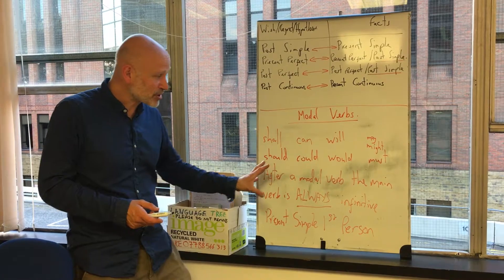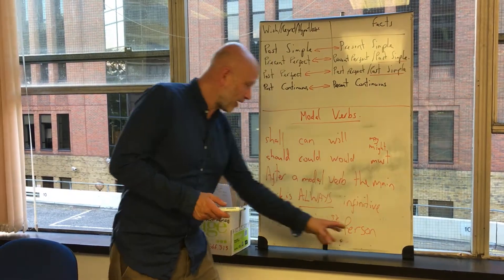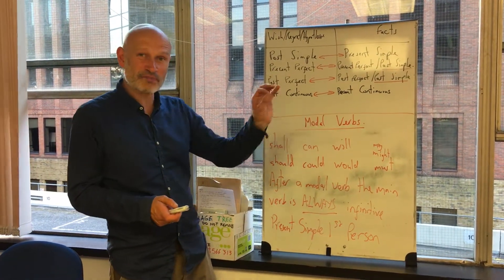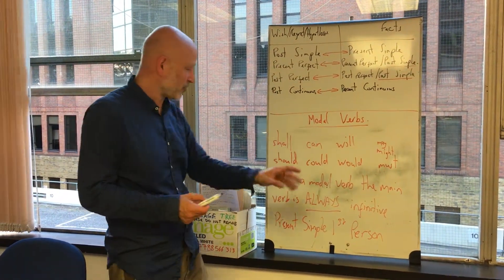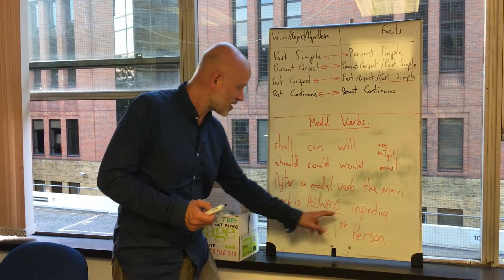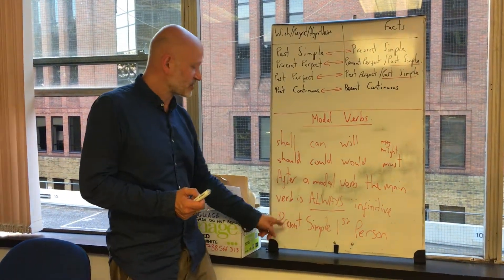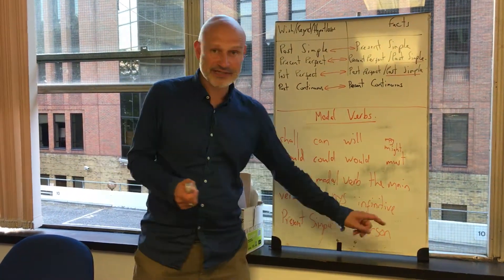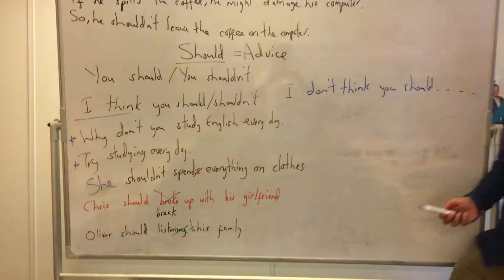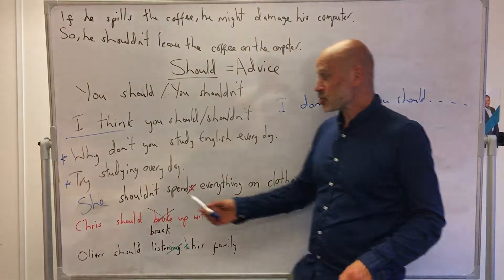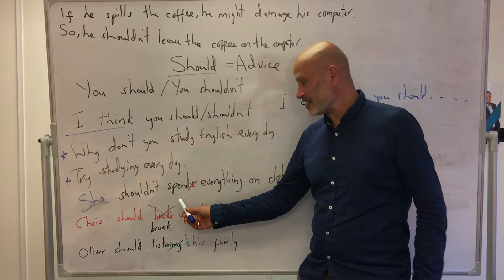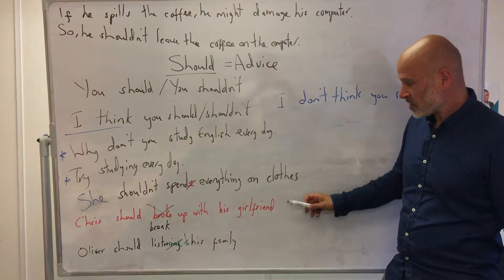I've just written the rule here. After a modal verb — remember these are called modal auxiliary verbs — the main verb is always infinitive. It's always present simple, first person. Therefore: she shouldn't spend everything on clothes.